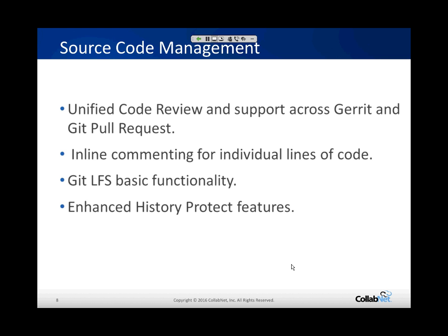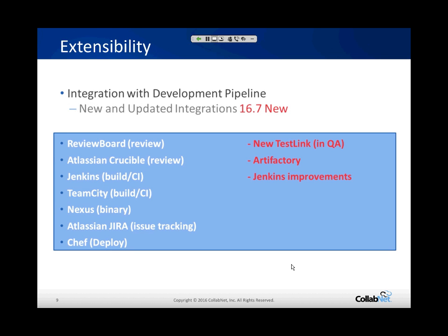One of the other things we added in Git is large file system capability. Most systems using Git are limited to what Git offers, but in 16.7 we've extended that to large file system functionality. We've also enhanced our history protect features — if somebody goes in and tries to change or delete something, you can always recover it, bringing back entire repositories at one time.